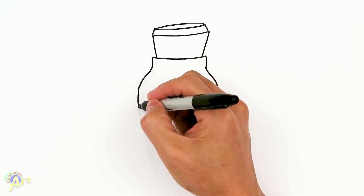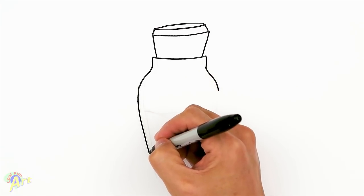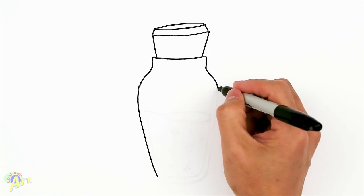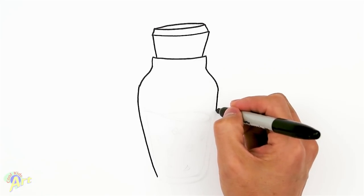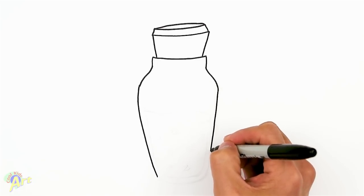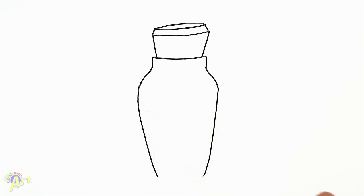This is the tricky part, especially on this side, if you want to get it symmetrical. It doesn't have to be perfect. Just come down and then over here, kind of curve it out.